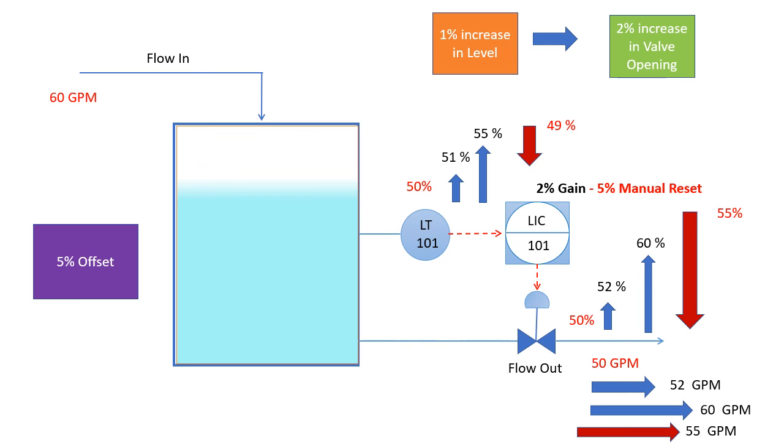So again, the proportional controller will try to squeeze the outlet more so that the level increases.